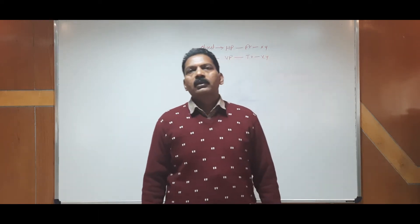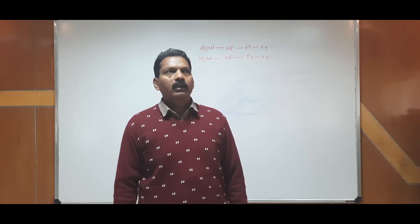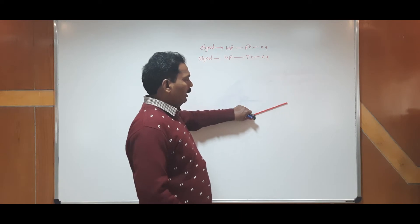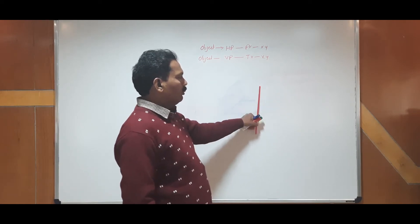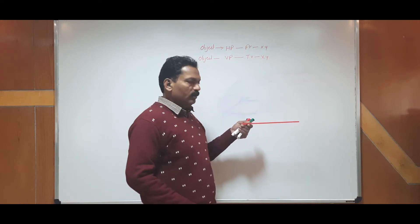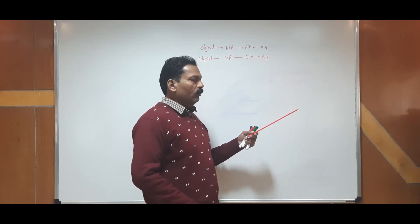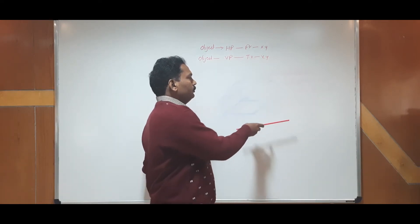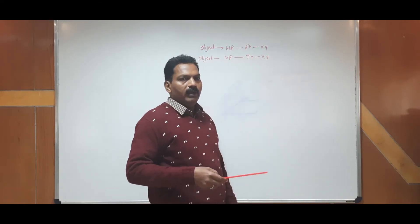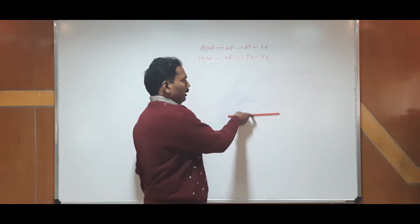Hello students. In the last lecture, we studied about the line when it is in VP and inclined to HP, and perpendicular to HP, or when it was parallel to VP and parallel to HP and inclined to HP. In both cases, the line was either in VP or parallel to VP. So we have seen that whenever it is parallel to VP, we can see the true length in front view.